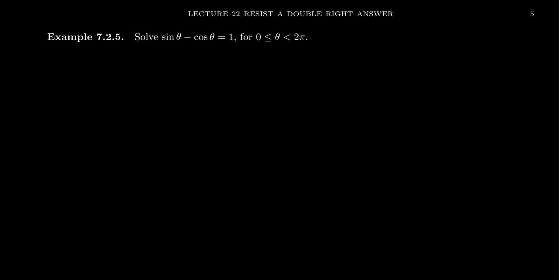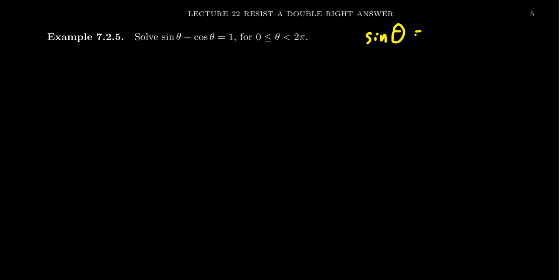The first thing we're going to do is isolate one of the trigonometric functions. Think of sine and cosine as acting like square roots, because by the Pythagorean relationship, if you solve for sine you get the square root of one minus cosine squared, and vice versa. We even see sine theta equal root two over two or root three over two for specific angles. So we can treat sine and cosine like radicals.